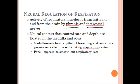The medulla sets the basic rhythm for breathing. It has a respiratory pacemaker called the VRG, or ventral respiratory group, found in the medulla, and that's what sets the pace for breathing. The pons' job is to basically smooth out the rhythm of the breathing.